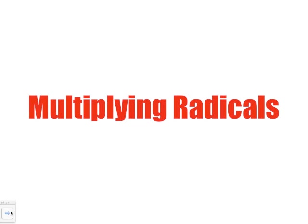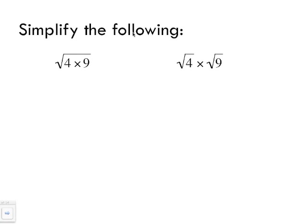Multiplying radicals. In the previous lesson we looked at what a radical is, so just to reiterate: any radical has the following symbol, which we know as a square root symbol. Whenever we see this symbol, it represents a radical. Now let's simplify the following: we've got a radical of four times nine, and two separate radical symbols of four and nine multiplied together.